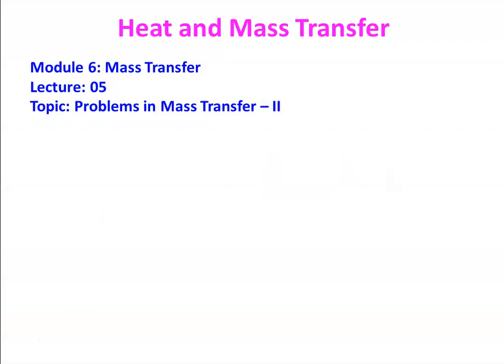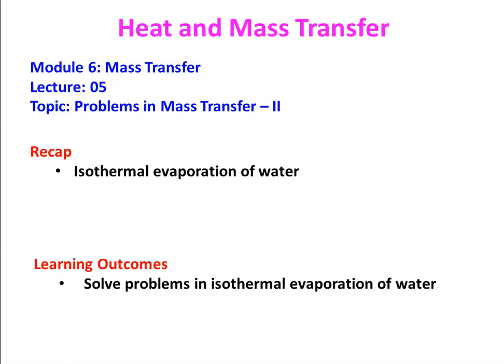This is lecture number 5 on the module, Mass Transfer. We are going to solve problems in the mass transfer, part 2. We recap from the previous lectures: isothermal evaporation of water. We calculated the isothermal evaporation of water using an equation. At the end of this lecture, the student will be able to solve problems on isothermal evaporation of water.